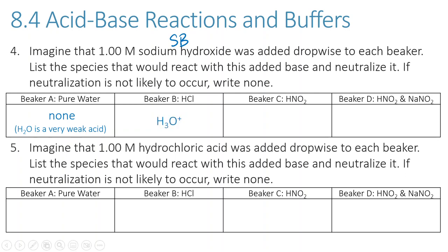Beaker B has a strong acid in it, forming H₃O⁺ in solution. If you add a drop of sodium hydroxide to beaker B, it'll be neutralized by the acid present and the pH won't change as dramatically. Beaker C contains the weak acid HNO₂; if there's a sufficient amount, it can neutralize the added sodium hydroxide, so the pH won't change much either. Beaker D, a mixture of HNO₂ and NaNO₂, also has the weak acid HNO₂ that can neutralize added sodium hydroxide.